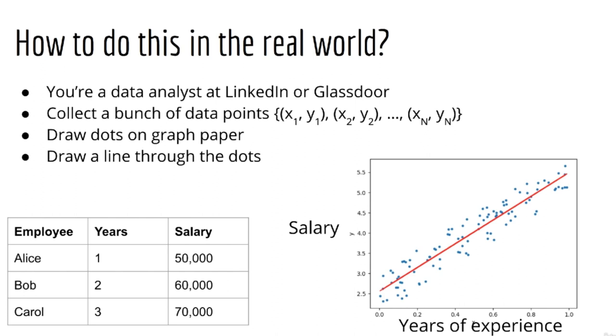To expand on this a little bit, here's how you would do this in the quote-unquote real world. Let's say, for example, you're a data scientist at LinkedIn or Glassdoor. So you have access to their database, and you can see, for each user, how many years of experience they have and what their current salary is. Let's call these data points x1 up to xn and y1 up to yn. As mentioned previously, x is the years of experience and y represents the salary. We use y to represent the true salary, whereas y hat represents the predicted salary. Both x and y are indexed by the numbers 1 to n, so there are n people in our database.